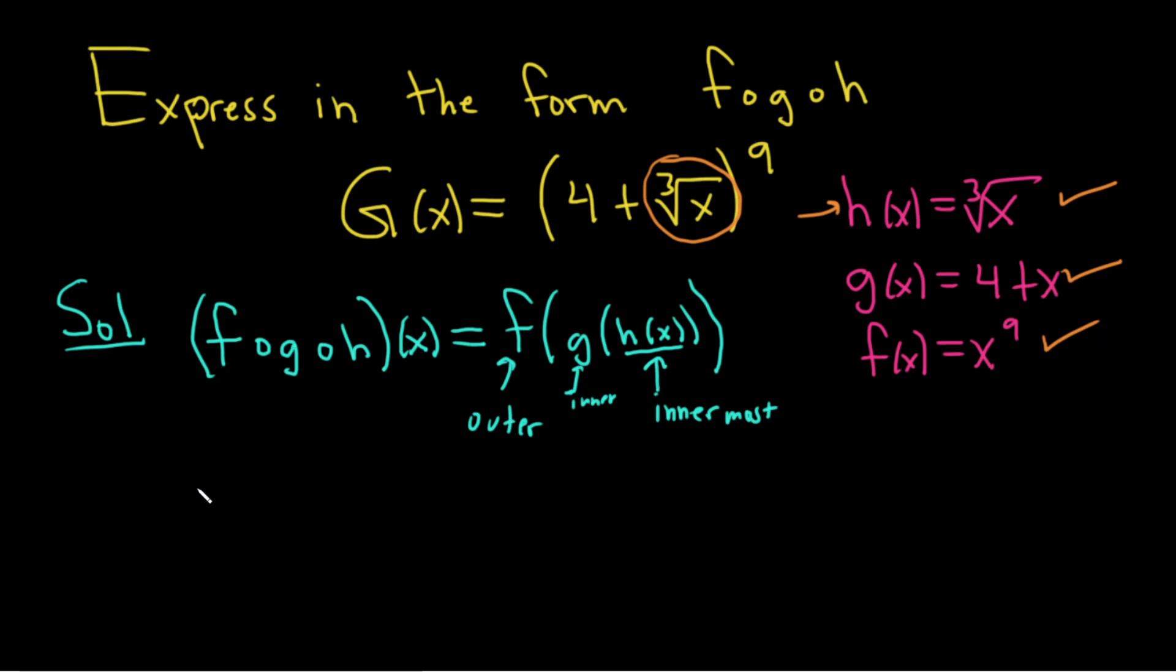So our function, big G of x, is going to be equal to f∘g∘h of x, where these are the functions.